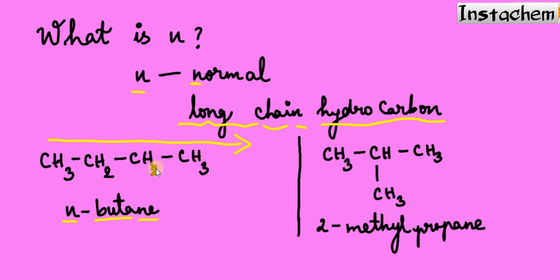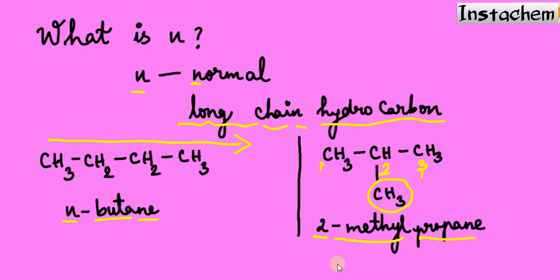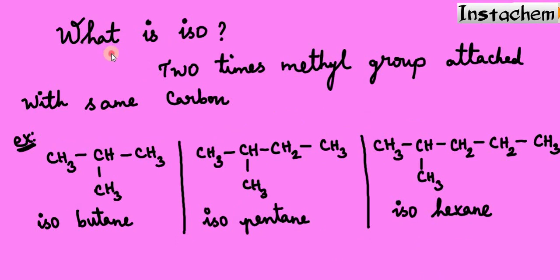Now let's take another example — this is not a normal hydrocarbon; it has branches, so it is abnormal. When you say normal, all carbons are connected in a straight chain. When it has branches, we use numbers. For example, carbon one, carbon two, carbon three — a methyl group is attached at carbon two as a branch, so we call it 2-methylpropane. Here we do not use 'n'. That is the meaning of 'n'.